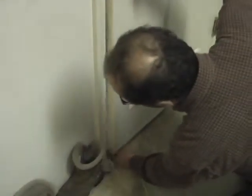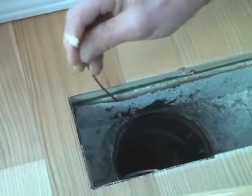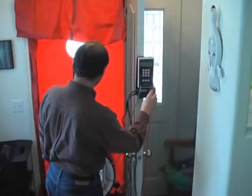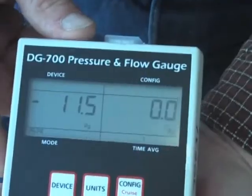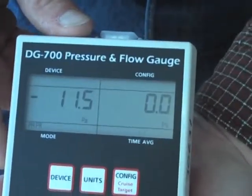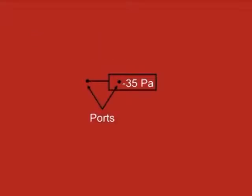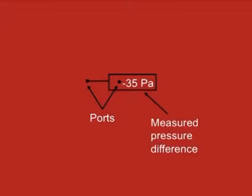Understanding the connections between different areas of a building is important in evaluating building performance. This can be done using a blower door assembly and a pressure gauge. In this video, this symbol represents a pressure gauge. The two dots represent input and reference ports, and the value is the measured pressure difference.